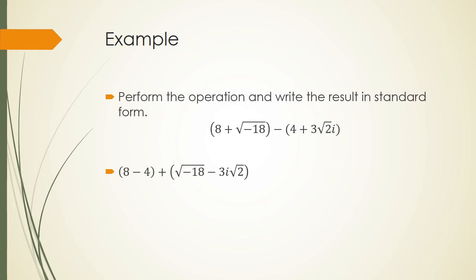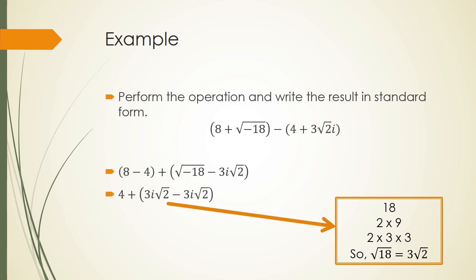The first thing we want to do here is we want to split up our numbers. We have the real and we have the imaginary. We also need to make sure that we write the square root of negative 18 as i times the square root of 18. And then we're going to break the square root of 18 down. It is 3 times 3 times 2. We have a pair of 3s, so they get to come out with the i. And we have 3i squared of 2 minus 3i squared of 2. And that results in 4.